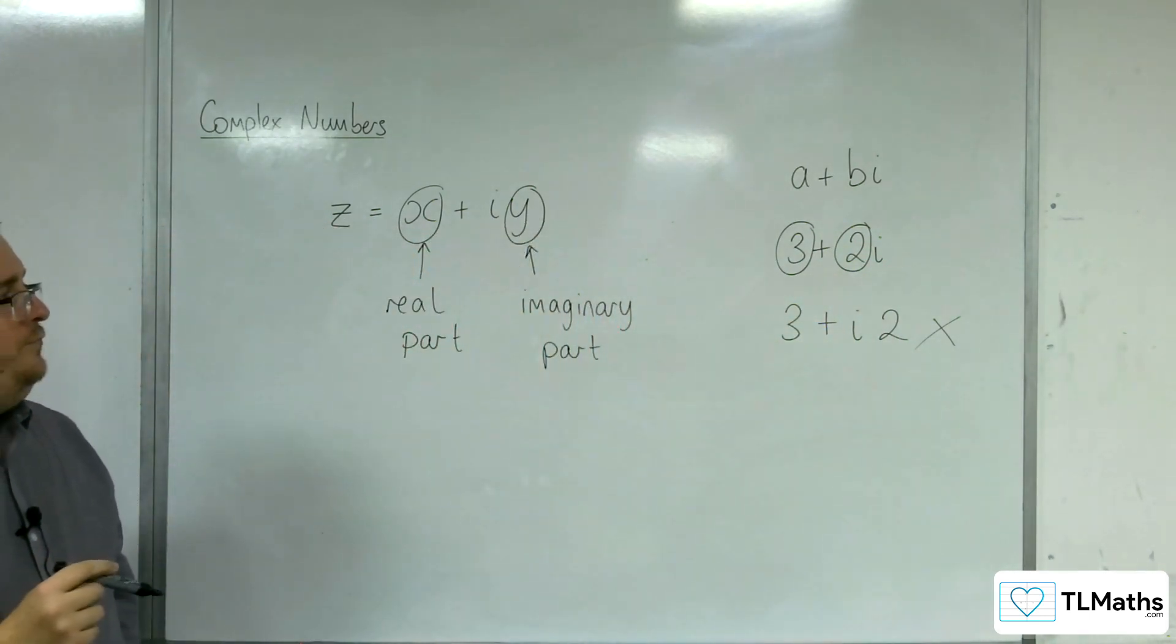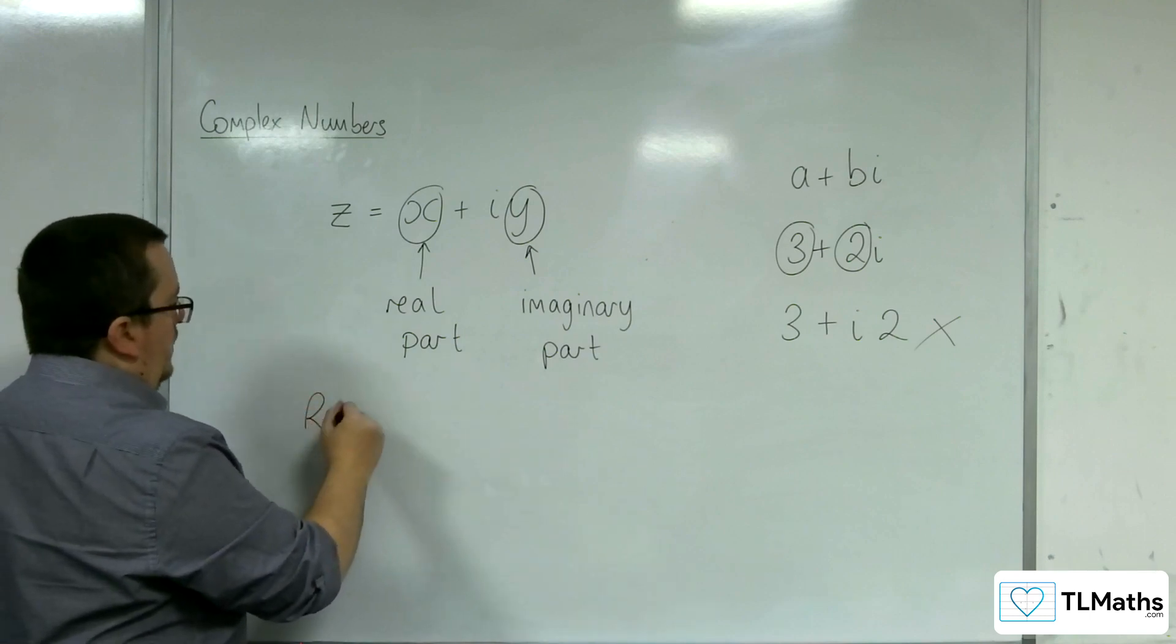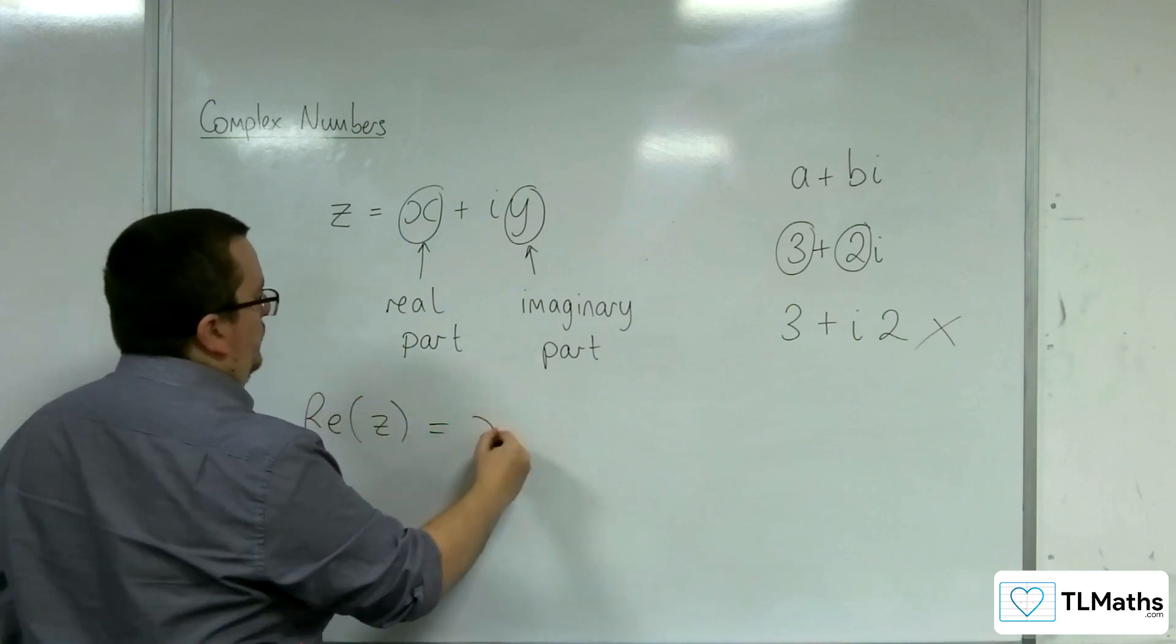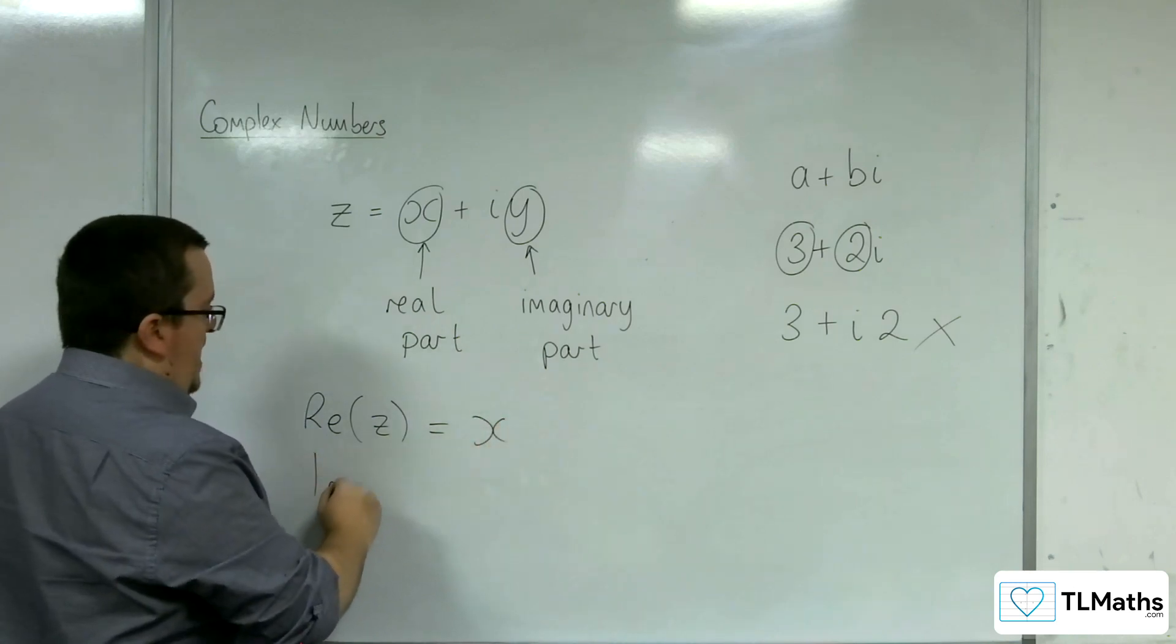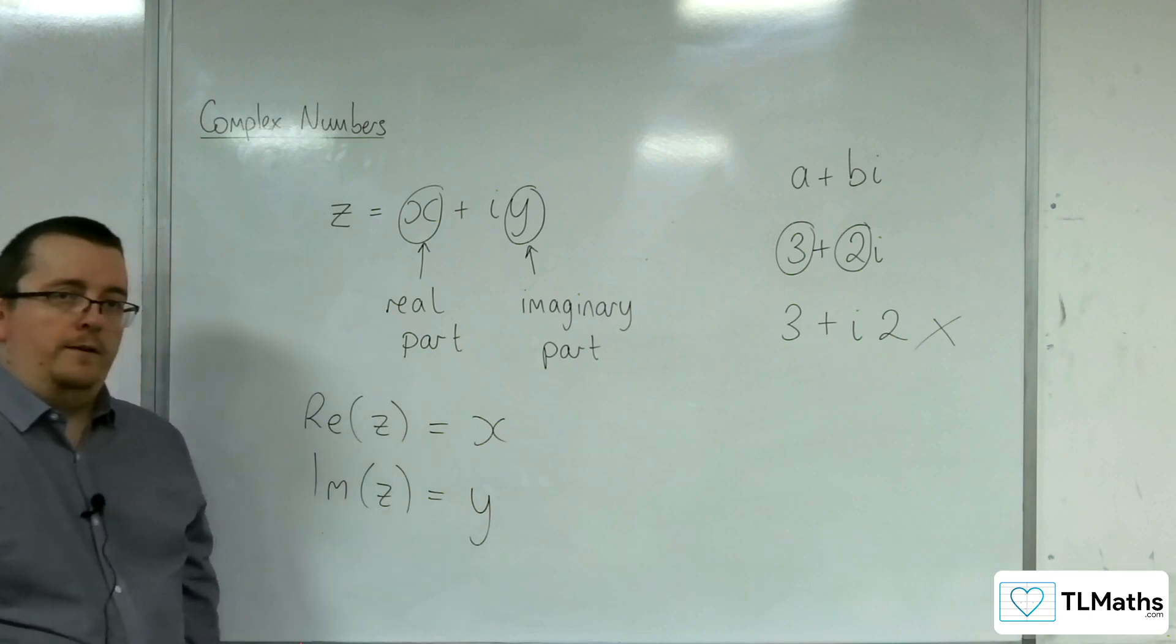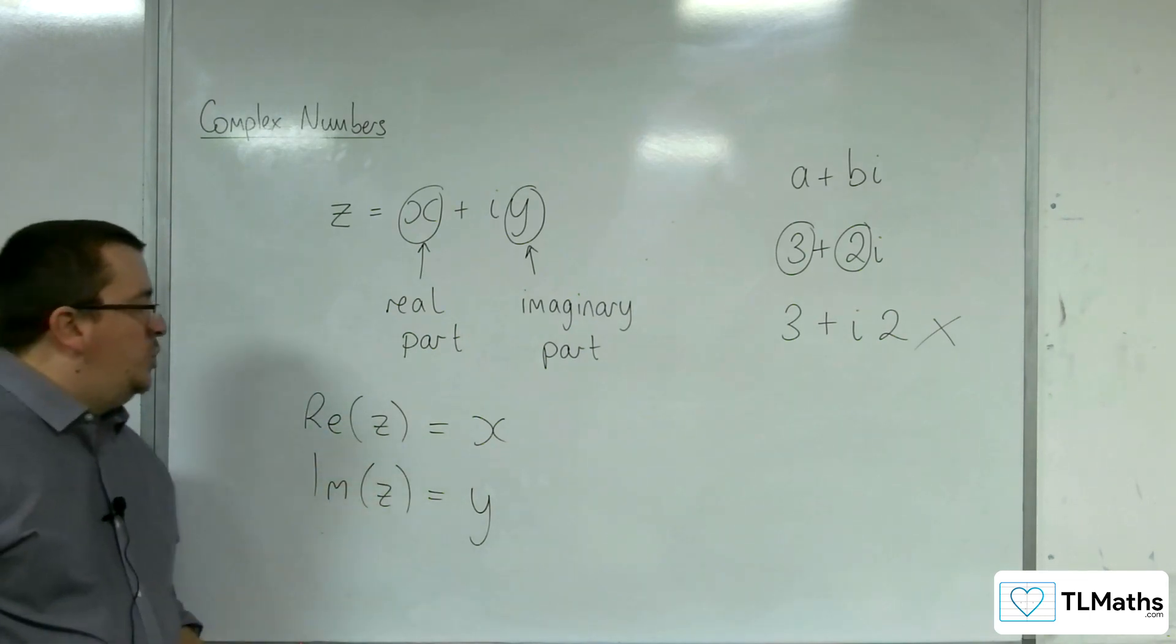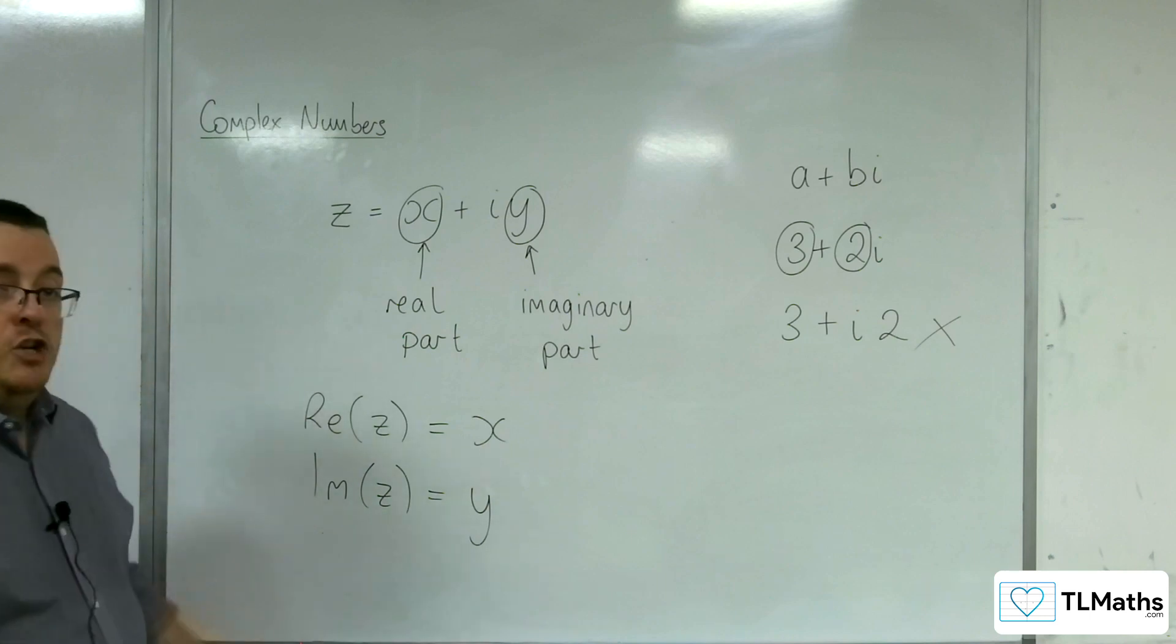Okay. So you could write something like the real part of z is equal to x. And the imaginary part of z is equal to y. Okay. So that is abbreviated notation to mean the real and imaginary parts.